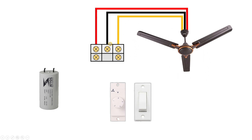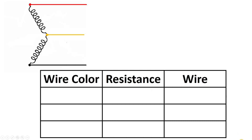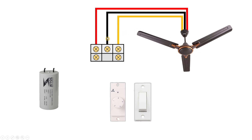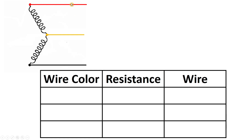For identification of wires, make a table like this to note down all the measurements. As I told you, from the ceiling fan three wires come out for connection. In some ceiling fans you can find four wires. If from your ceiling fan three wires are coming out, then imagine the circuit diagram like this one.